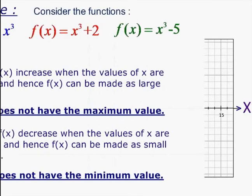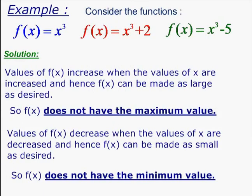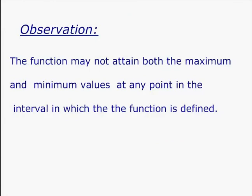We can conclude that the values of f increase when the values of x are increased, and hence f(x) can be made as large as desired, so f(x) does not have a maximum value. Similarly, values of f decrease when the values of x are decreased, and hence f(x) can be made as small as desired, so f(x) does not have a minimum value. This is applicable to all three functions. Hence, we observe that there are functions which may not attain both the maximum and minimum values at any point in the interval in which the function is defined.